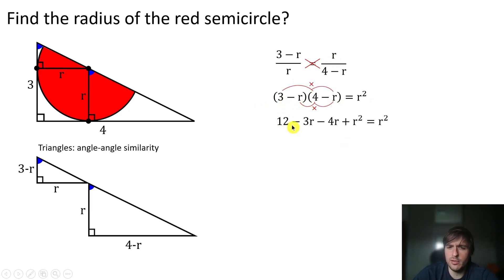We're going to expand this multiplication to obtain 12 - 3r - 4r + r² = r². This r² cancels with this one. We're going to sum -3r with -4r to obtain -7r. So we're going to put the 12 to the right side of the equation.